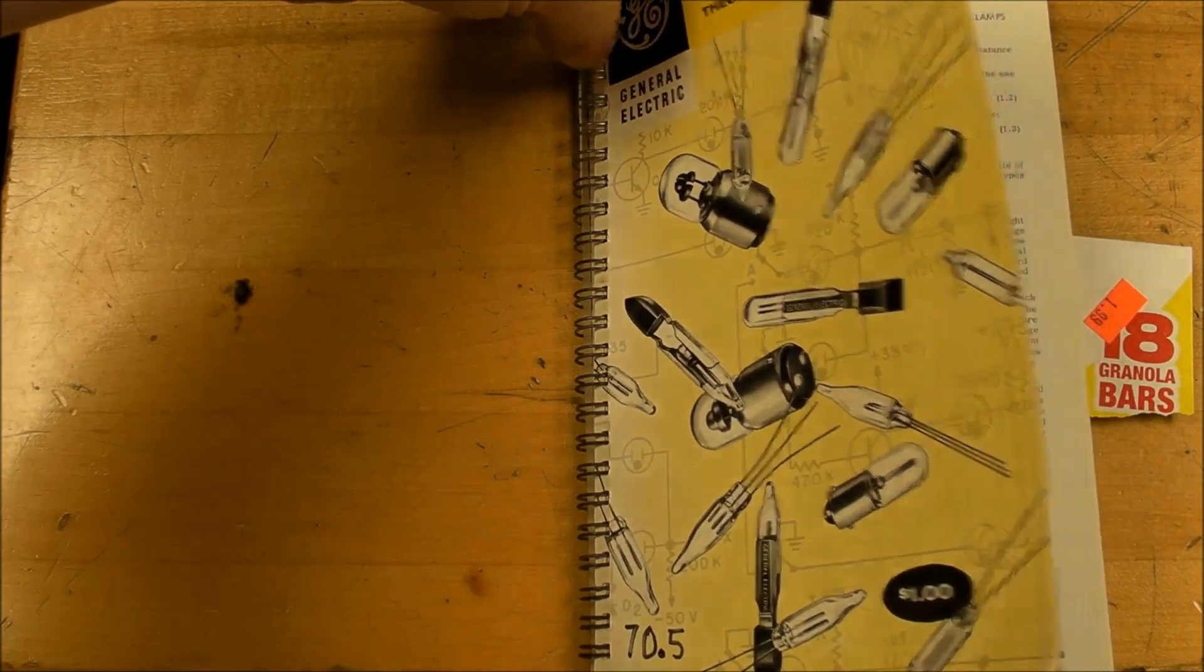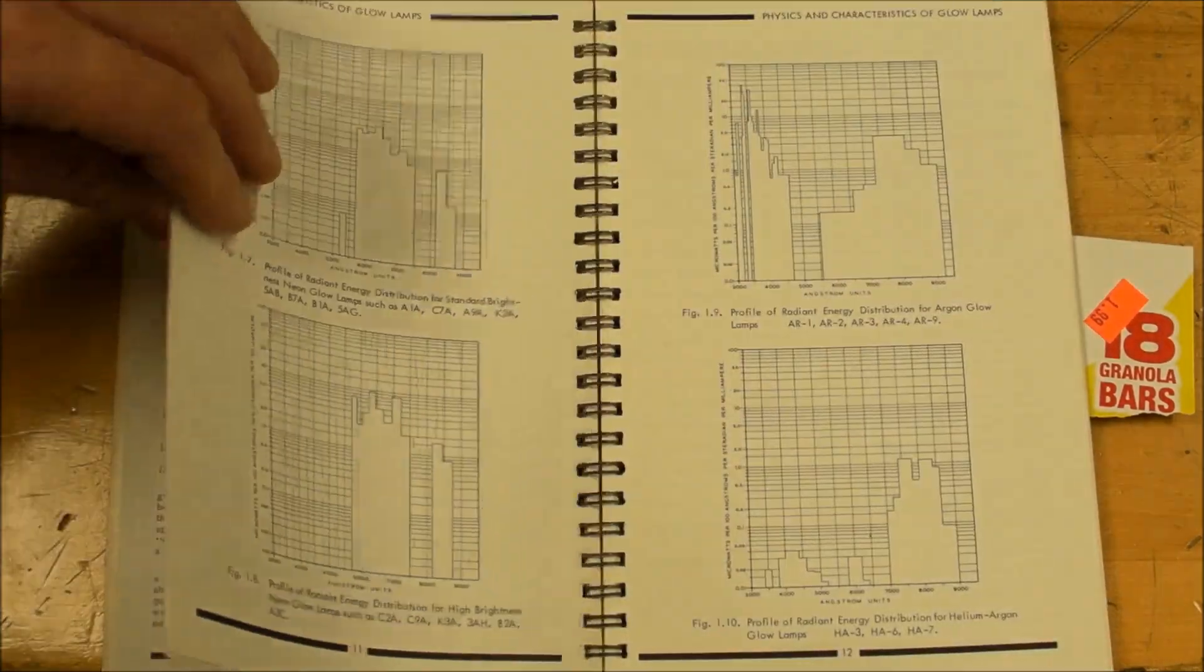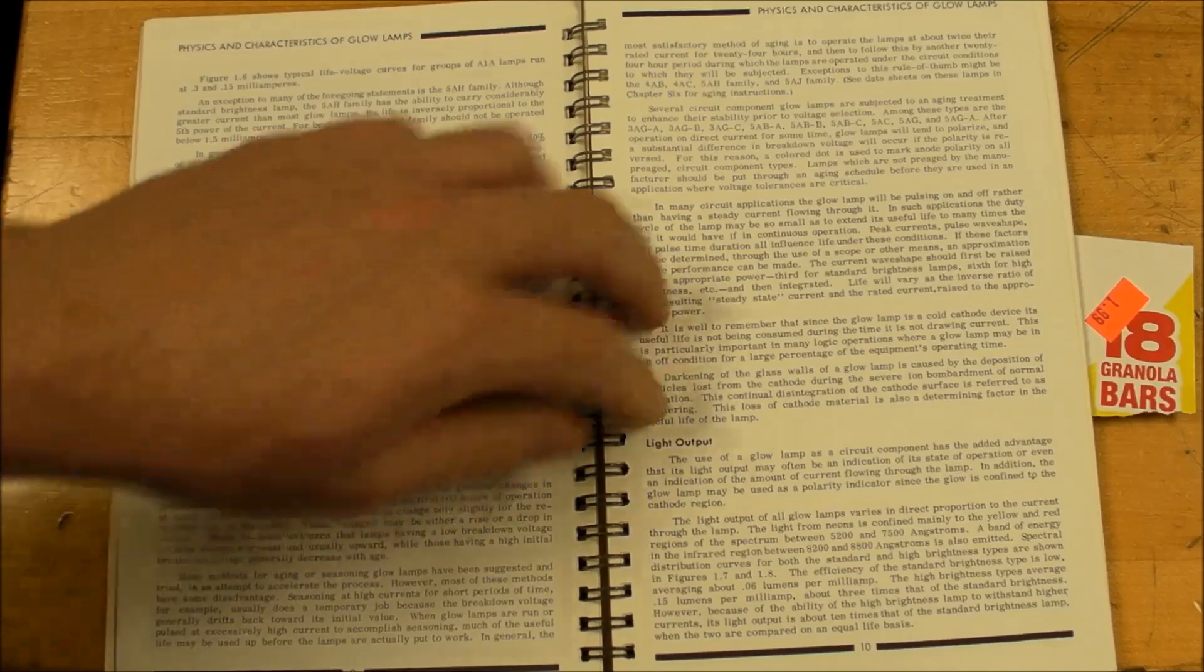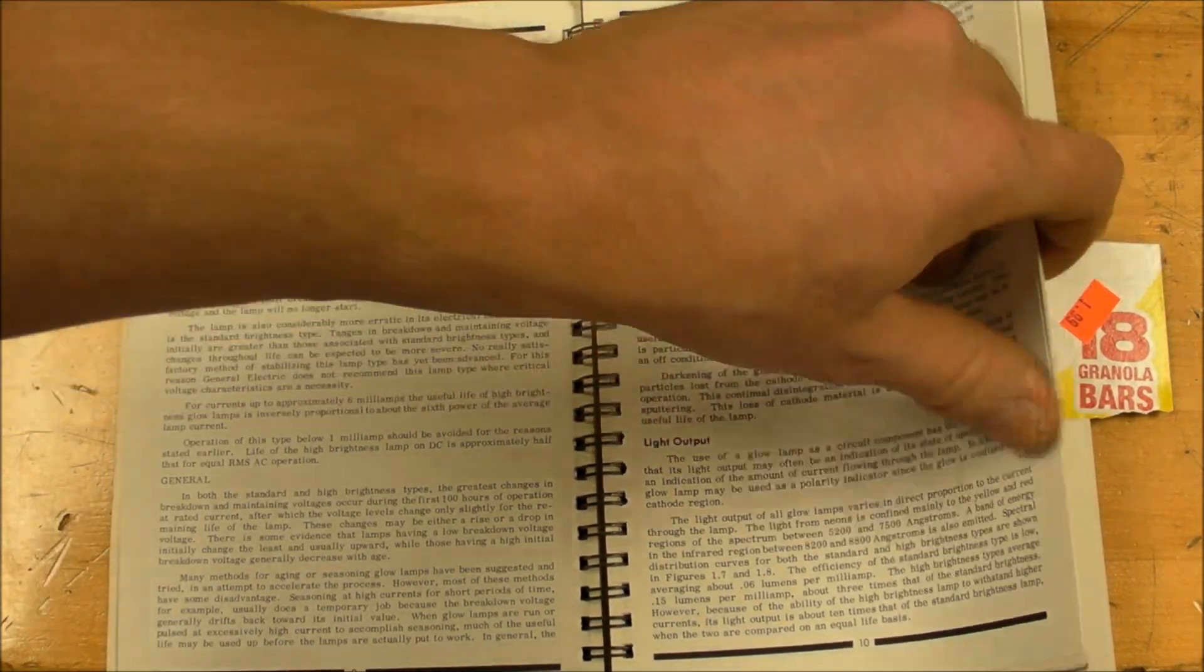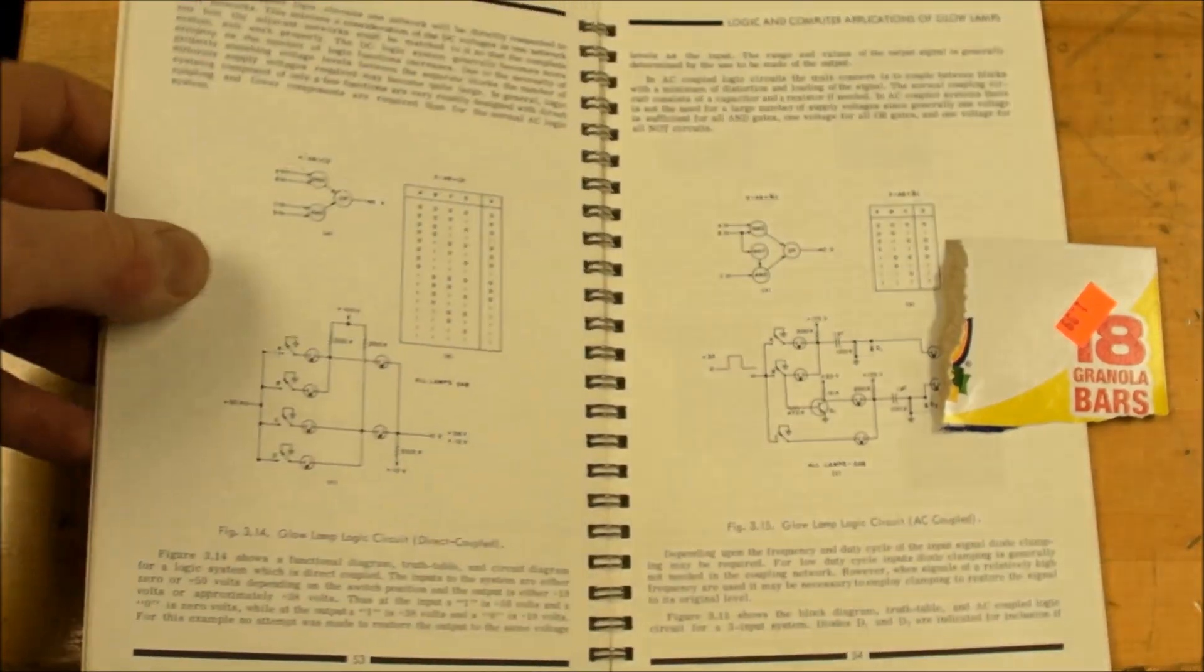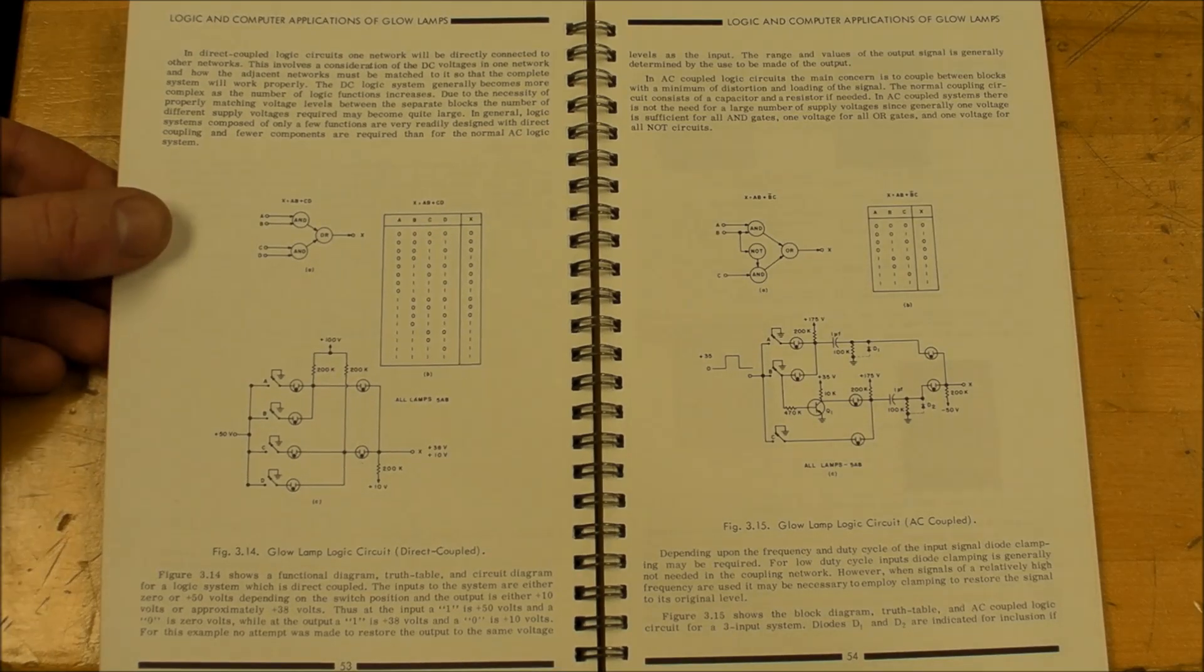It's got lots of interesting information, general and specific information on neon and argon glow lamps. It's got voltage regulator circuits, relaxation oscillators, and what's really interesting is digital logic gates.